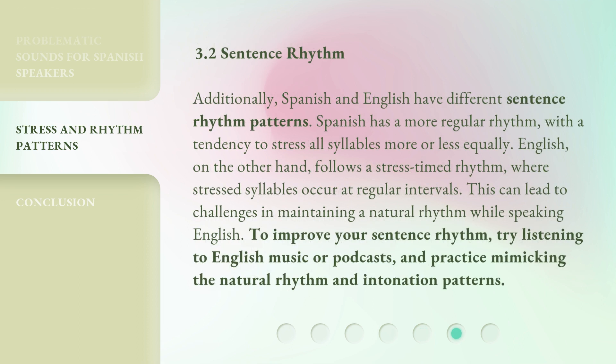Additionally, Spanish and English have different sentence rhythm patterns. Spanish has a more regular rhythm, with a tendency to stress all syllables more or less equally. English, on the other hand, follows a stress-timed rhythm, where stressed syllables occur at regular intervals. This can lead to challenges in maintaining a natural rhythm while speaking English. To improve your sentence rhythm, try listening to English music or podcasts, and practice mimicking the natural rhythm and intonation patterns.